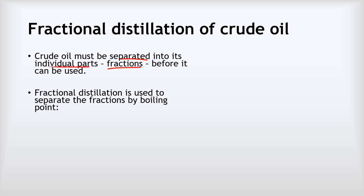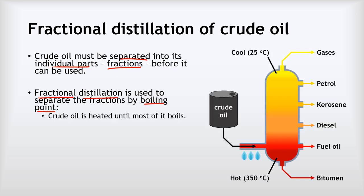To separate the crude oil, we use a method called fractional distillation, which you've met before in the separating mixtures unit. What this does is it separates the fractions by their different boiling points, because each fraction has its own different boiling point. And it works something like this.